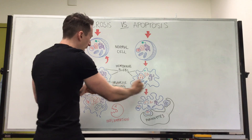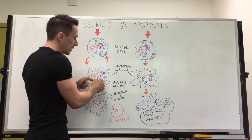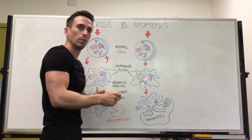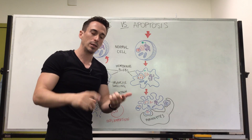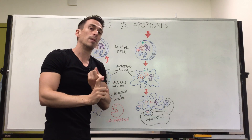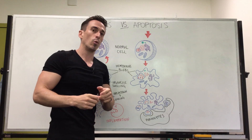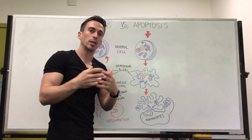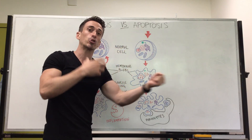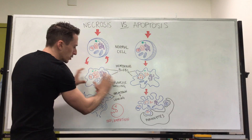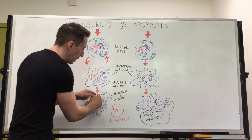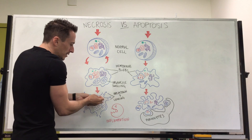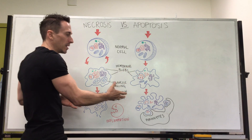As we continue down the necrotic pathway, the organelles — for example the mitochondria — begin to swell, and the mitochondria stop working properly so they don't produce ATP. They also start producing what we call reactive oxygen species — oxygen molecules that tear electrons off things — which damages pretty much everything. The membrane then becomes broken and leaks, so it starts to leak all its components out of the cell.